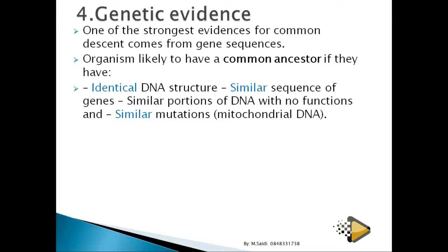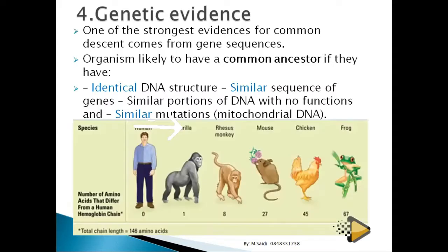Non-coding or 'nonsense' DNA has no function but can mutate and gain a function in organisms where mutation occurs. Similar mutations are another indicator. Looking at this picture, it shows the percentage differences in hemoglobin genes between organisms. Humans compared to other humans show zero percent difference.